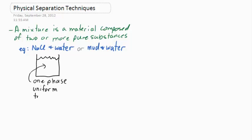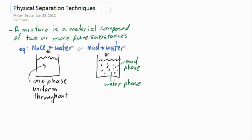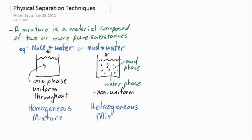In sodium chloride and water, there's only one phase. It's completely uniform. But with muddy water, there are particles of mud in the water. There's two phases: the mud portion and the water. It's non-uniform. Homogeneous describes uniform throughout. Heterogeneous describes non-uniform or more than one phase.